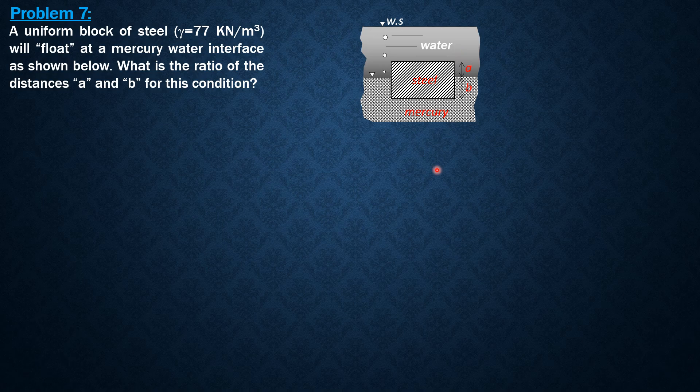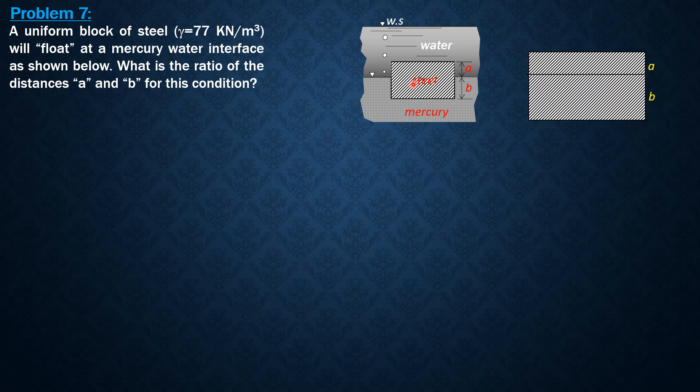Let's isolate this part and the forces acting would be the weight of the steel block, buoyant force in the mercury portion, and buoyant force in the water portion. Summation of forces vertical equals zero, and we have buoyant force in mercury plus buoyant force in water equals weight.